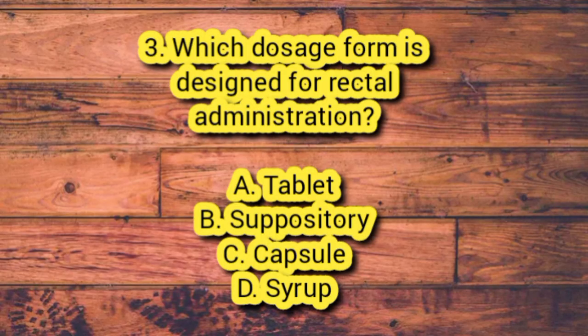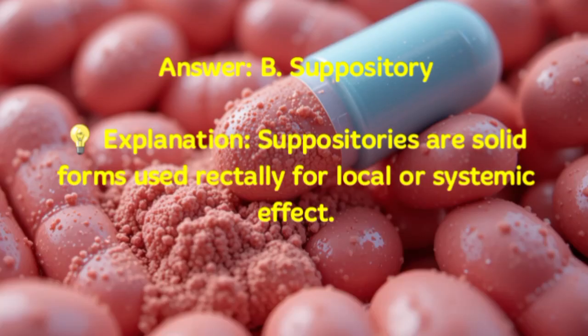Number 3. Which dosage form is designed for rectal administration? A. Tablet. B. Suppository. C. Capsule. D. Syrup. Answer: B. Suppository. Explanation: Suppositories are solid forms used rectally for local or systemic effect.